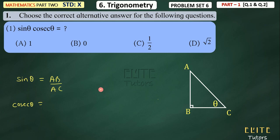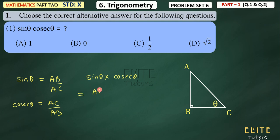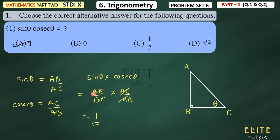So we look at the triangle — opposite upon hypotenuse, then hypotenuse is AC upon AB. So this is AC upon AB. In the same triangle, we have multiplication, so if sin theta multiplied — what will we get? Sin theta is AB upon AC and cosec theta is AC upon AB. And if you see, AB cancels and AC cancels, so nothing remains — this solution is also 1. And you also know: sin theta × cosec theta = 1, cos theta × sec theta = 1, tan theta × cot theta = 1. You also know this from the previous video.